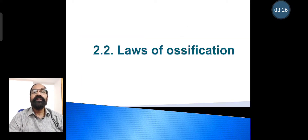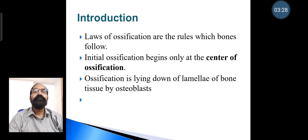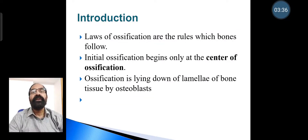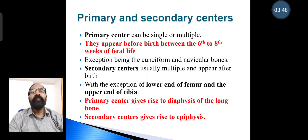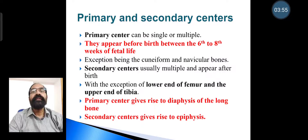Now we come to the laws of ossification. Laws of ossification are the rules which bones follow. Initial ossification begins only at the center of ossification, which is the laying down of lamellae of bone tissue by osteoblasts. Primary centers can be single or multiple and appear before birth, between six to eight weeks of fetal life, except for the cuneiform and navicular bones.